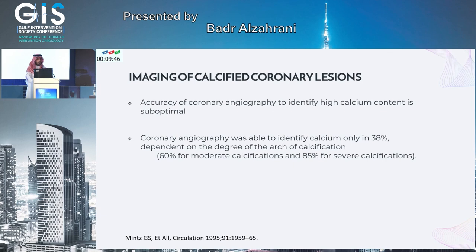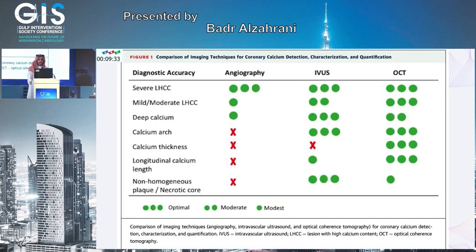Coronary angiogram is suboptimal in heavily calcified vessels — calcium is identified in only 38% of patients with calcified vessels, 60% for moderate calcification, and 85% for severe calcification. IVUS and OCT are good imaging tools to assess calcium burden. Deep calcium: IVUS is superior to OCT. Calcium arc can be assessed by both. OCT is superior for thickness measurement and longitudinal calcium length. For virtual histology, IVUS is the preferred tool.